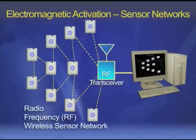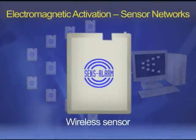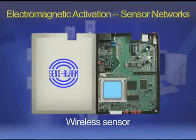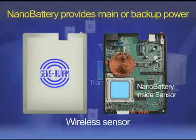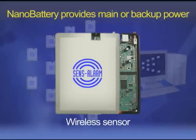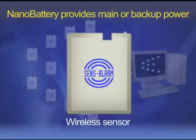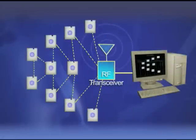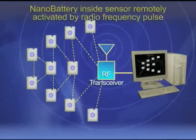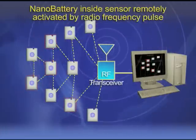The fourth activation method is electromagnetic, as might be used when powering a network of wireless sensors. The smart nanobattery could be used to provide either main power or backup power, and can be activated by the user remotely, allowing the user to maintain control over the network even from a distance.